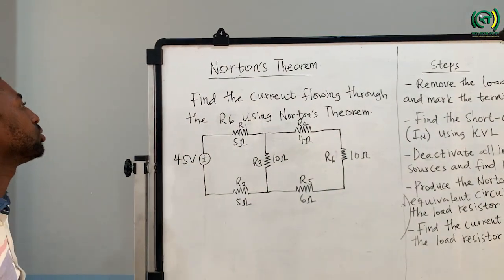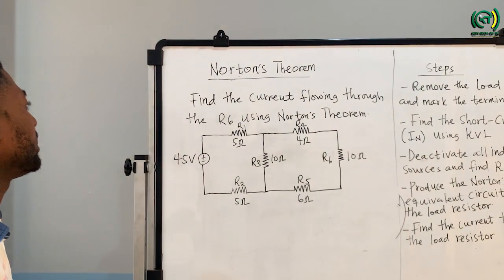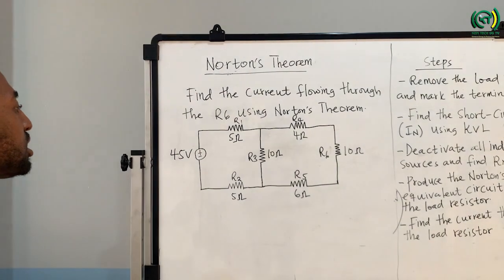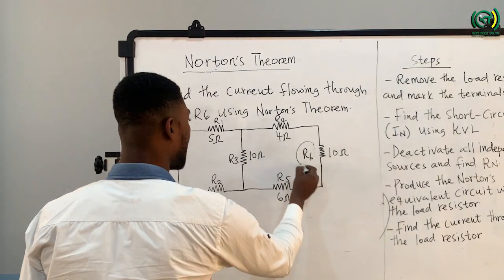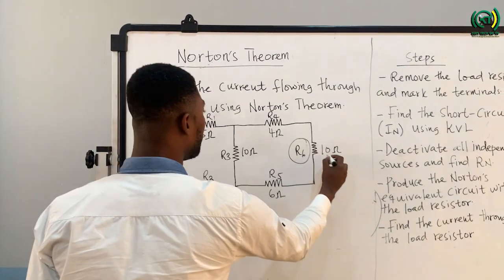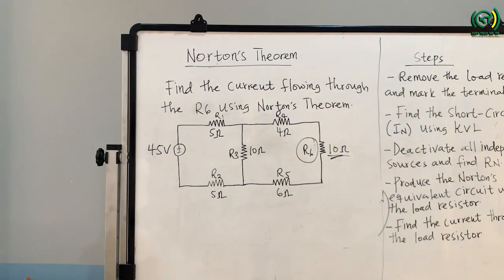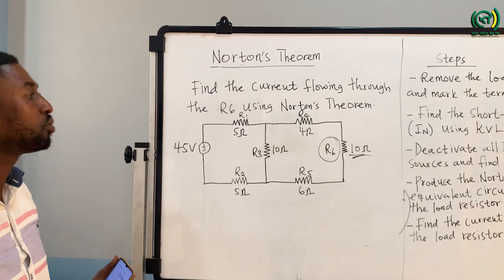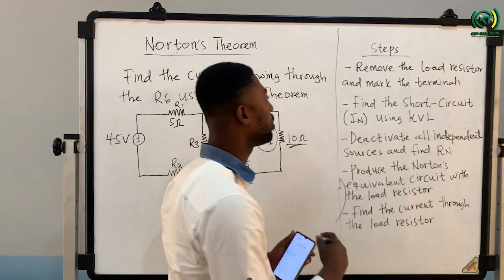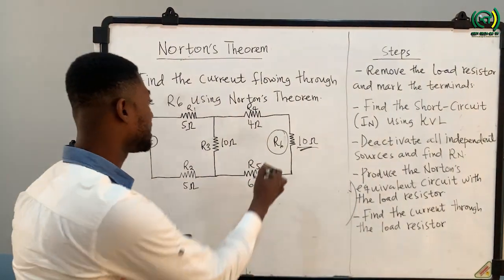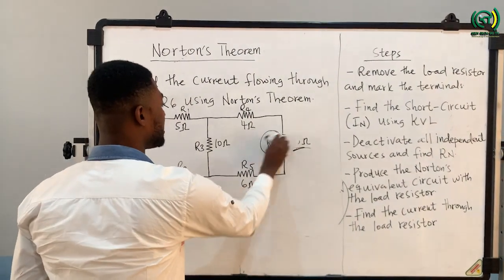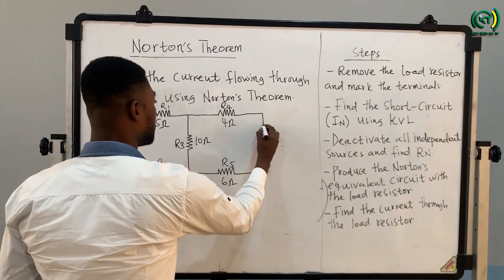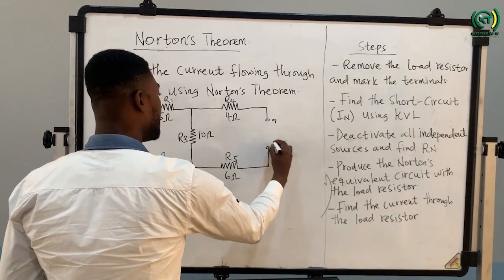Let's use Norton's theorem to simplify this circuit. The question is: find the current flowing through the R6 resistor using Norton's theorem. R6 is a 10 ohm resistor, and we are supposed to calculate the current flowing through it. Following the steps, the first thing is to remove the load resistor and mark the terminals. So R6 is our load resistor — we remove it and mark the terminals A and B.